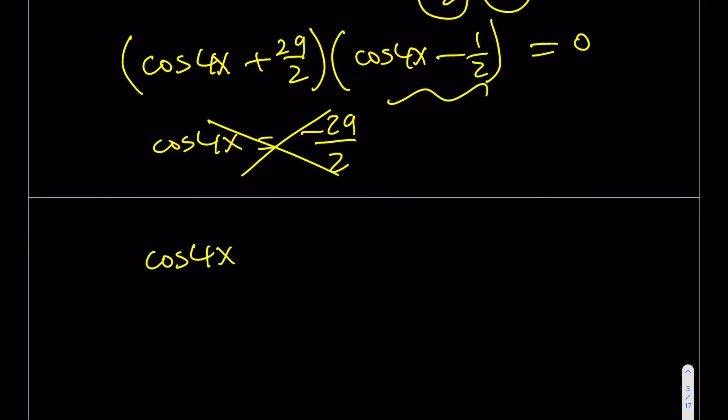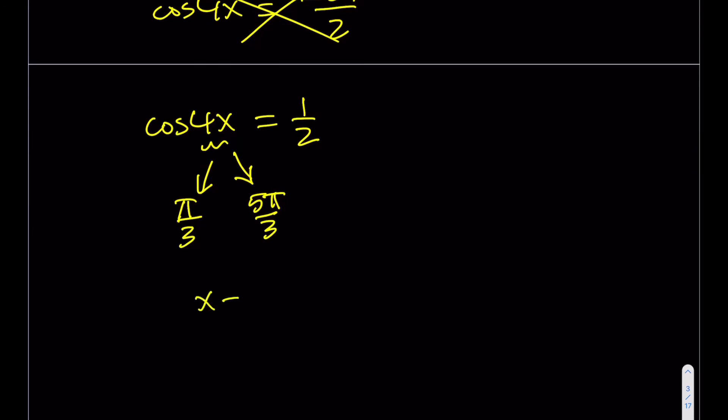Cosine of 4x is equal to 1 half, which means that 4x can be pi over 3, which is equivalent to 60 degrees, or 5 pi over 3. As you know, these two angles can add up to 2 pi, and x is still in the first corner. What we're going to do here is we're going to divide both sides by 4, and we're going to be getting, as x1, which is our first solution, pi over 12, and x2 is going to be 5 pi over 12, and you can easily verify that they're both in the first quadrant. So those are my solutions, and the other solutions can be easily obtained.